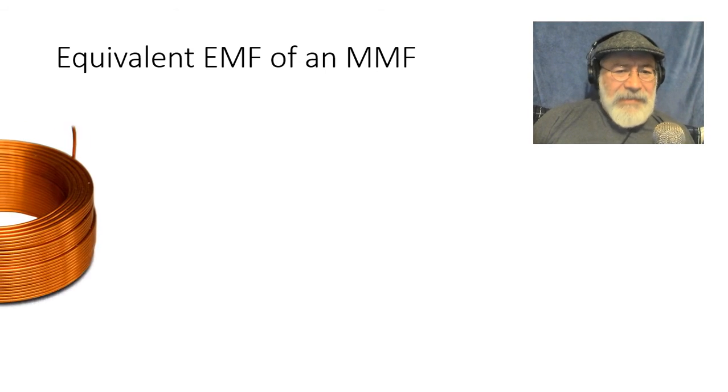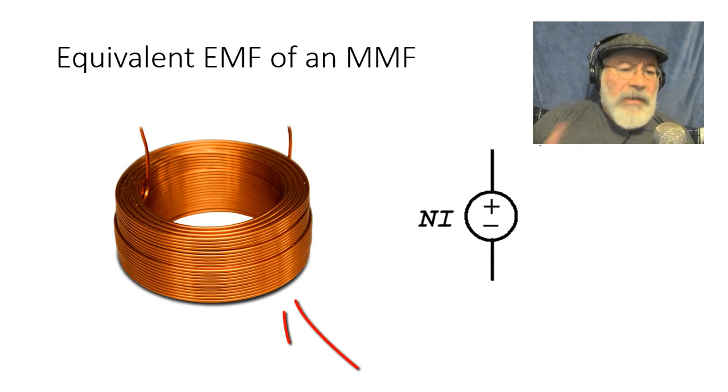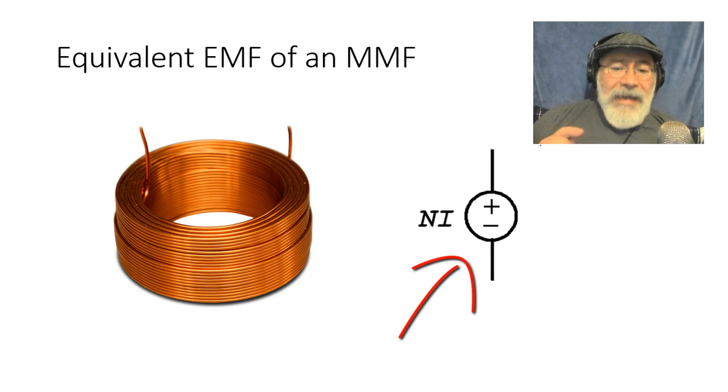How is that? When we have a coil with a current in it applying magnetomotive force to a magnetic circuit N times I, we can represent that in an equivalent electric circuit by an electromotive force with this value NI, an ideal V source.